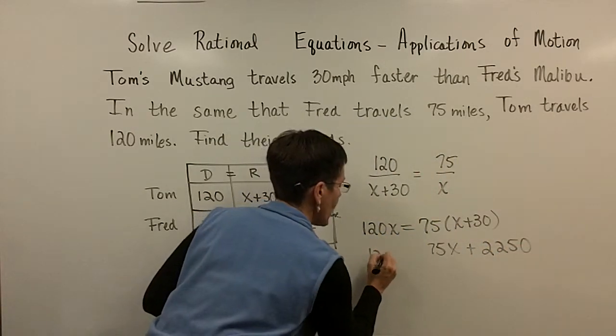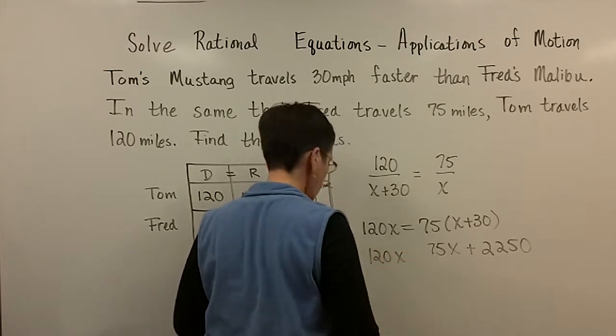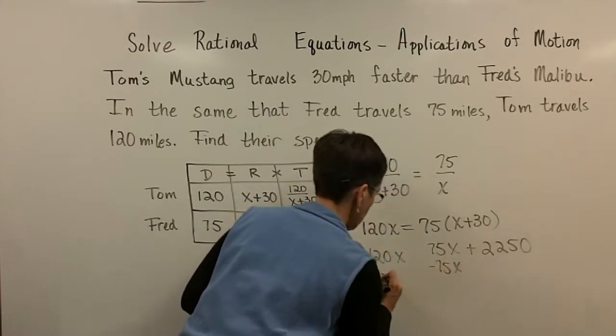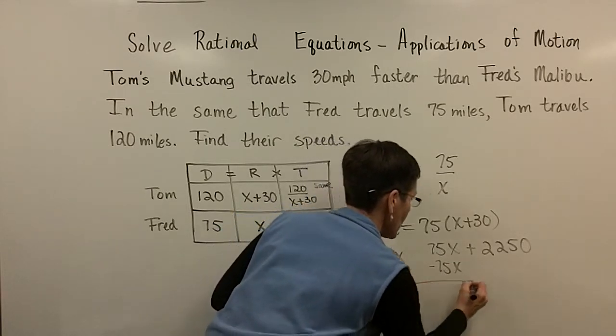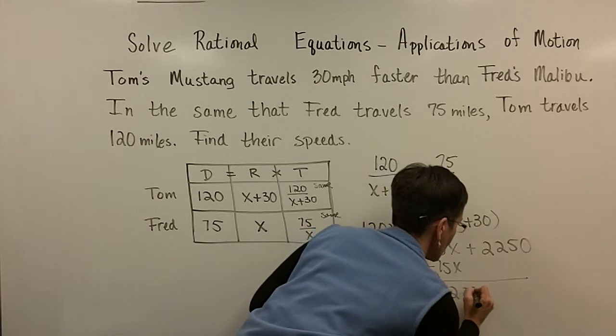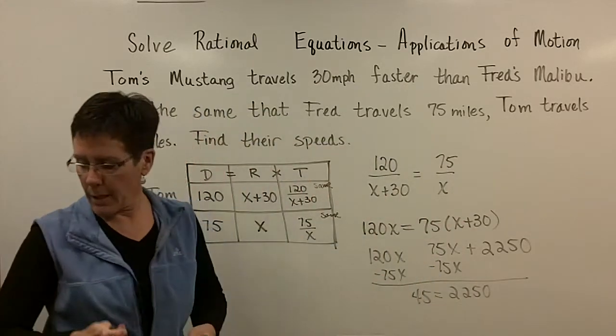I've got to distribute the 75x and 75 times 30 is 2250. And then I'm going to subtract 75x from both sides of the equation. Running out of space here. I think this will be 45x.